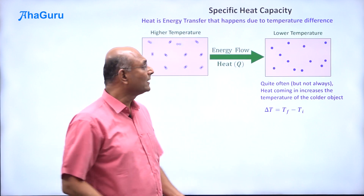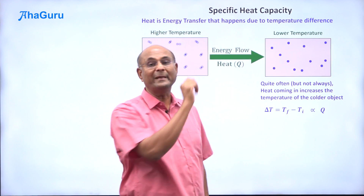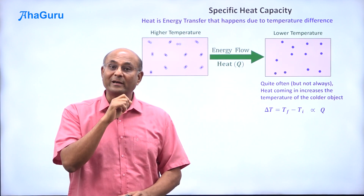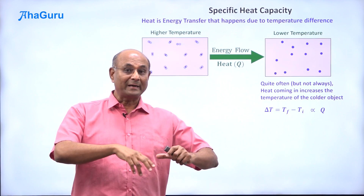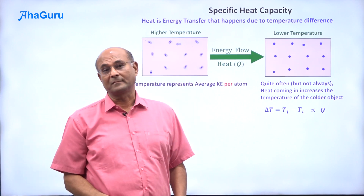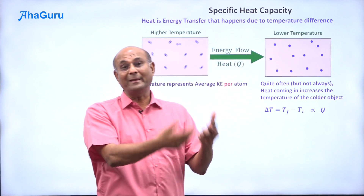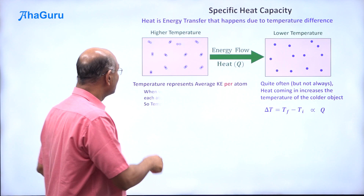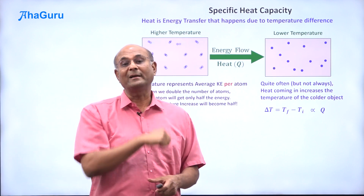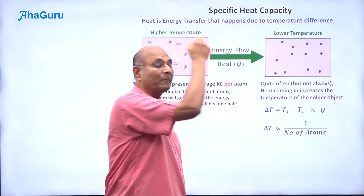The temperature increase delta T is obviously going to be proportional to the heat. More heat comes in, more will be the temperature increase. So delta T must be proportional to the quantity of heat Q coming in. Now, if you have a smaller object and a larger object — less number of atoms and more number of atoms — think about what temperature is. Temperature represents the average kinetic energy per atom or per molecule. The energy coming in is going to be divided equally amongst all the atoms. If you double the number of atoms, each atom will get only half the energy, so the temperature increase will be half. Therefore, temperature increase is inversely proportional to the number of atoms.